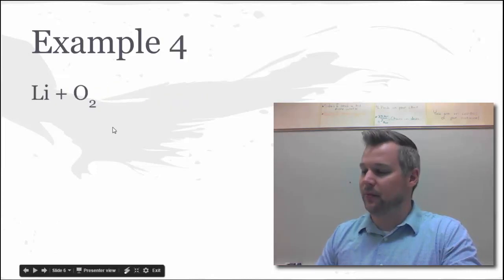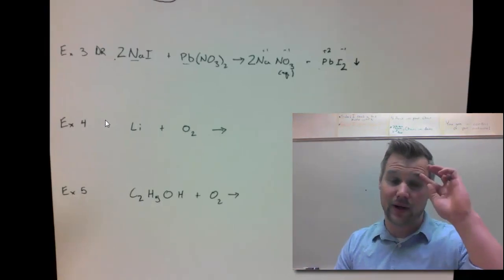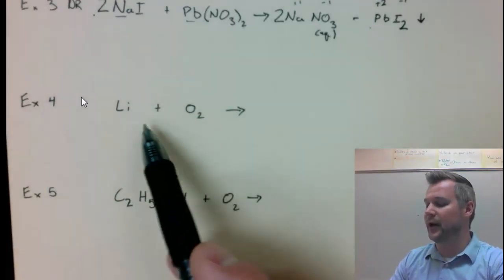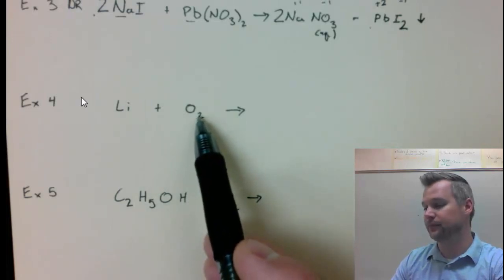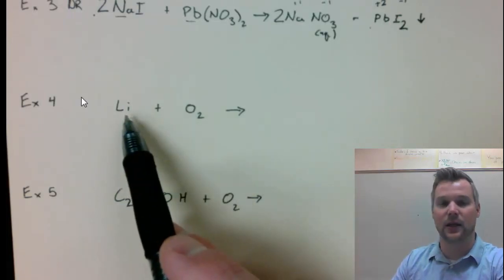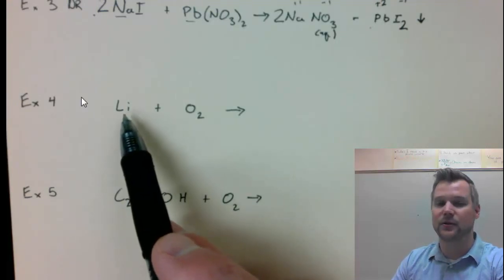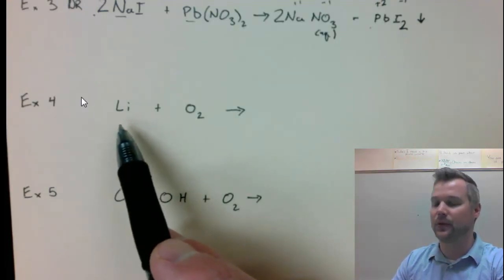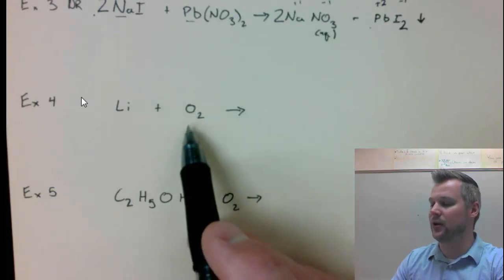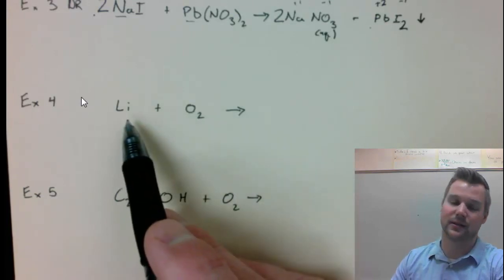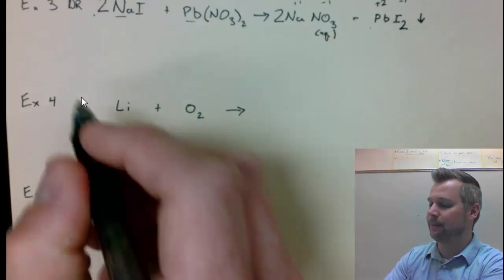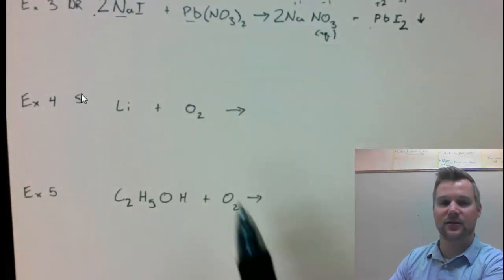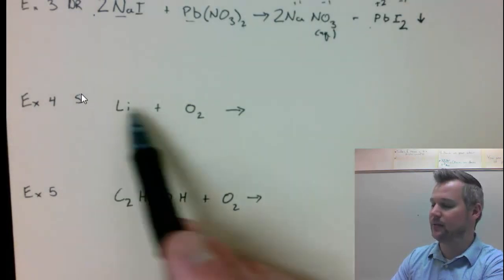So the fourth example problem, I have lithium and oxygen. Going through my questions, I have more than one reactant, so it's not decomp. One of my reactants is O2, so it might be combustion. But the other reactant is just a single atom. It's not carbon and hydrogen, so it's not going to be combustion. Then I don't have 2 ionics. I do have an element. I have a second element, so it's not single replacement, which means that this should be synthesis.